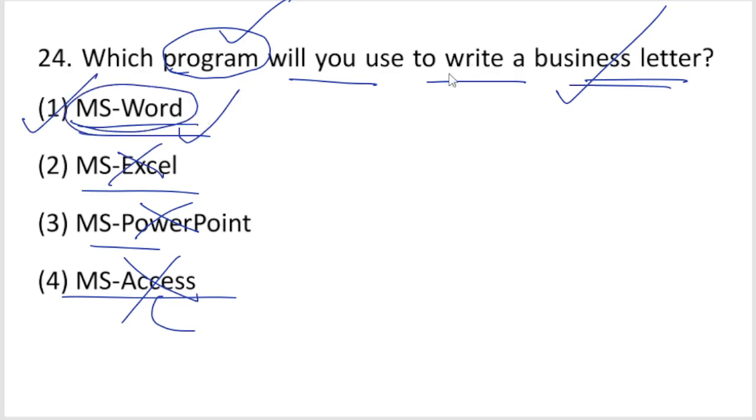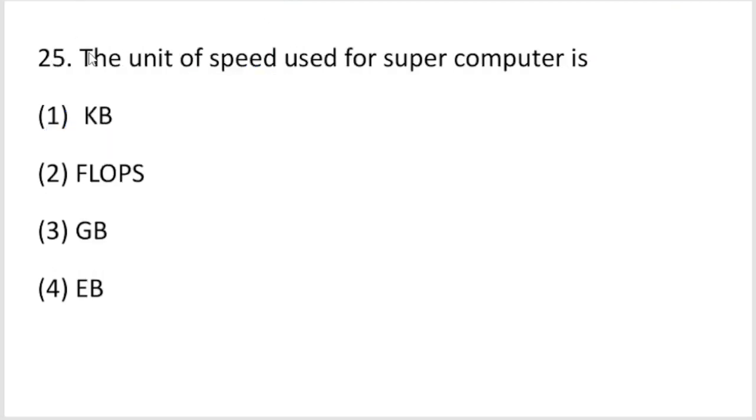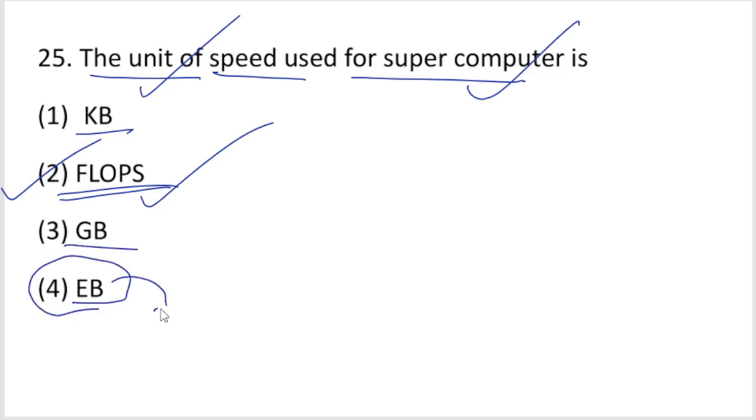Last question: The unit of speed used for supercomputers is FLOPS - option one is the right answer. Kilobyte and gigabyte are storage units, not speed. Please comment in the comment section. I hope this class was useful. Thank you for watching this class.